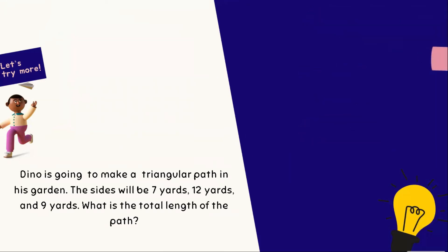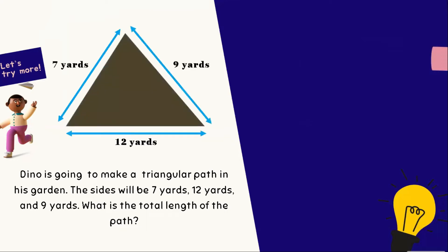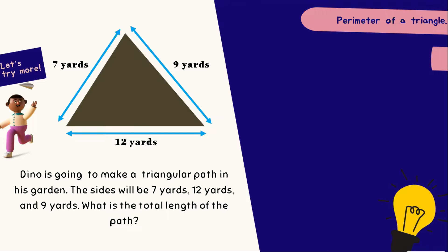One more try! So, Dino is going to make a triangular path in his garden. The sides will be 7 yards, 12 yards, and 9 yards. What is the total length of the path? In this case, we will be solving for the perimeter of a triangle. And the triangle that we are having in this given example is a triangle with no sides equal with each other.